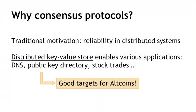Now that Bitcoin has solved the distributed consensus problem in a certain sense we'll explore in this lecture, we can think about solutions to all of these related problems. There are many altcoins — systems built on Bitcoin-like principles to achieve perhaps slightly different goals, sometimes currency systems, sometimes not. Given that we can solve distributed consensus and build a global distributed key-value store, it enables a lot of these other applications.